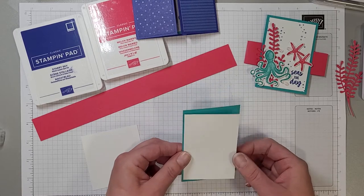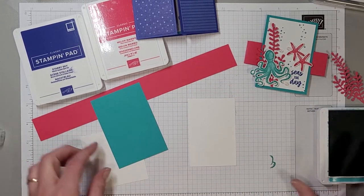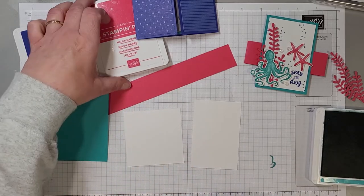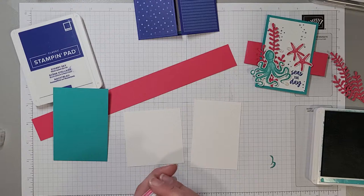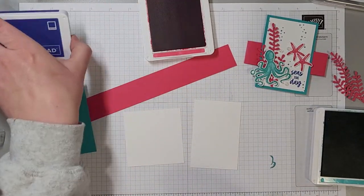All right so let's put this card all together. We're going to need Bermuda Bay ink, Melon Mambo ink and the Starry Sky as I mentioned. So I'm going to open up all three ink pads.